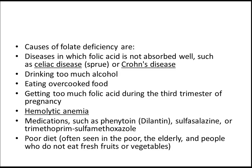Diseases in which folic acid is not absorbed well, such as Celiac disease or Crohn's disease, are important causes. In the USMLE examination, they may give you a patient suffering from Crohn's disease and ask about the cause of their anemia. Just remember folate deficiency as an option, and use lab tests to differentiate from other anemias. Remember: Celiac disease, Crohn's disease, or any disease causing difficulty absorbing folic acid can be a cause.